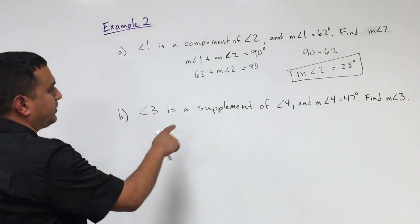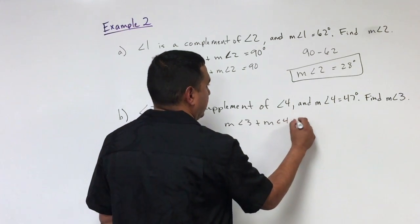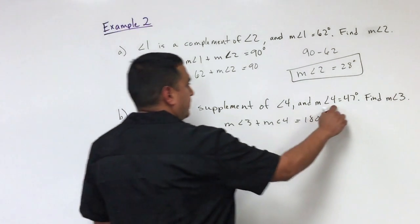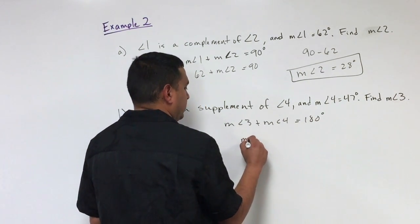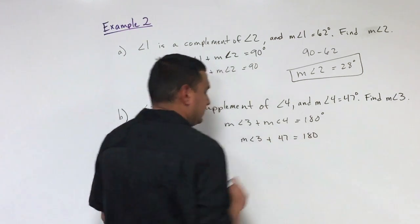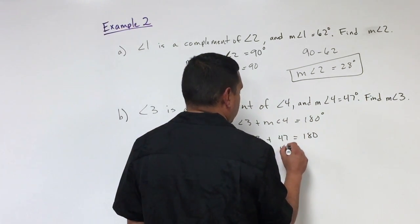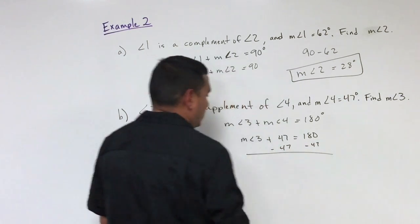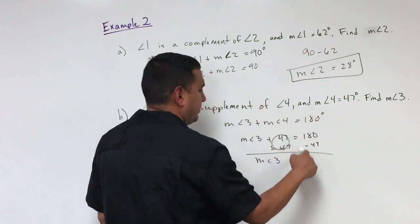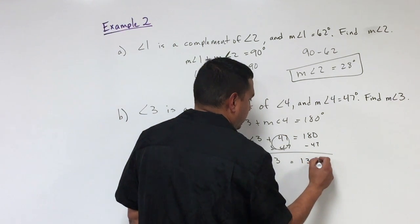Example two, part B: angle three is a supplement of angle four, and the measure of angle four is 47 degrees. Find the measure of angle three. Since they're supplementary, the measure of angle three plus the measure of angle four must equal 180 degrees. So angle three plus 47 equals 180. Subtracting 47 from both sides, the measure of angle three equals 180 minus 47, which is 133 degrees.